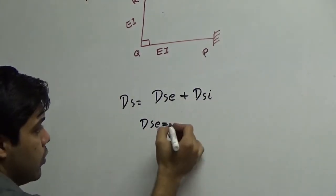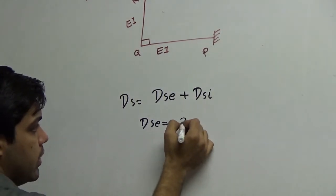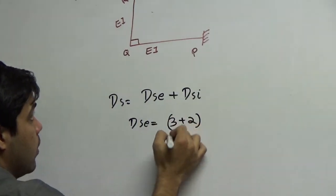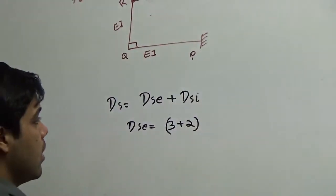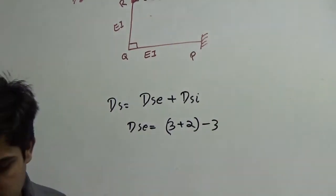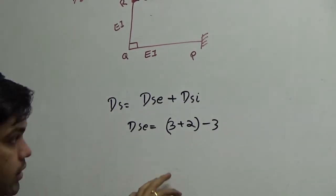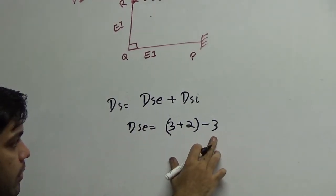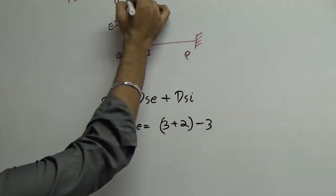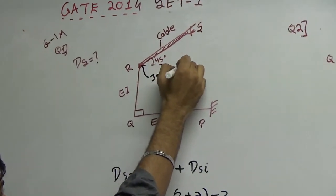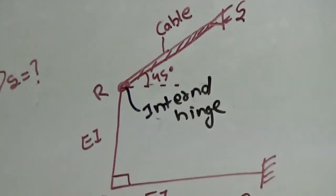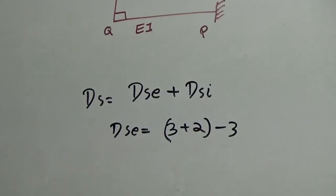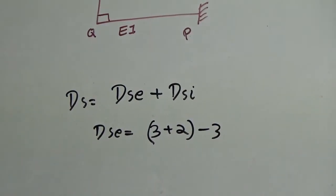Now, what is the external indeterminacy in this case? The external indeterminacy will be equal to the total number of reactions which are 3 at P end and 2 on the other end. Now, if you have 3 reactions here and 2 reactions here, how many equilibrium equations you have? If you consider this problem, because 3 plus 2 and minus 3 will be the equilibrium equation, and here there is an internal hinge.